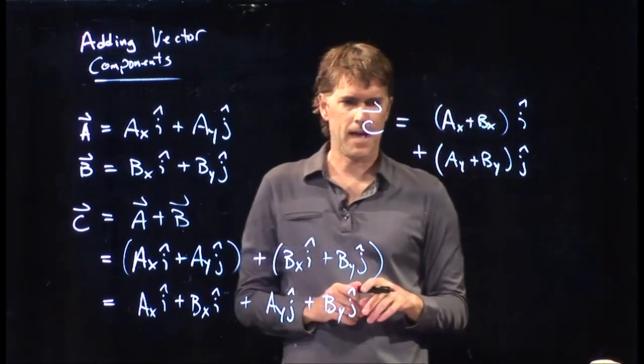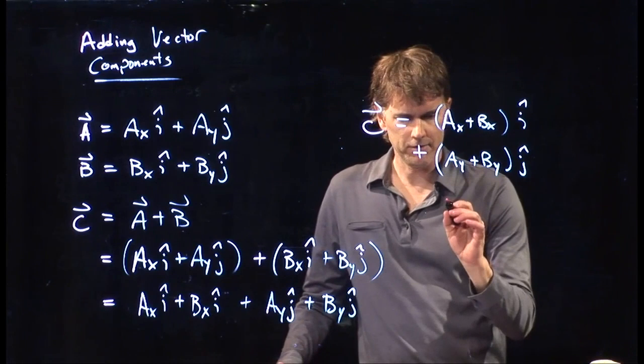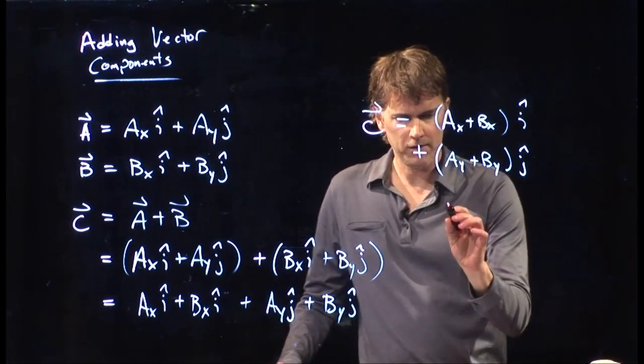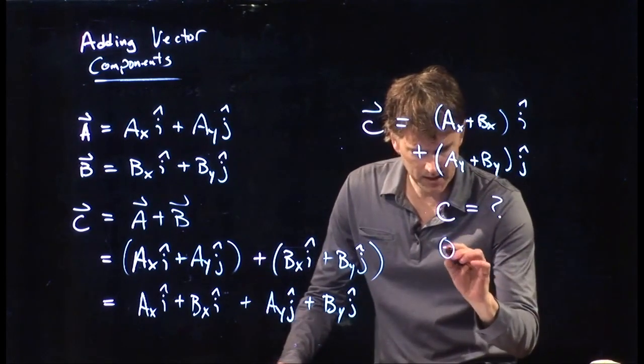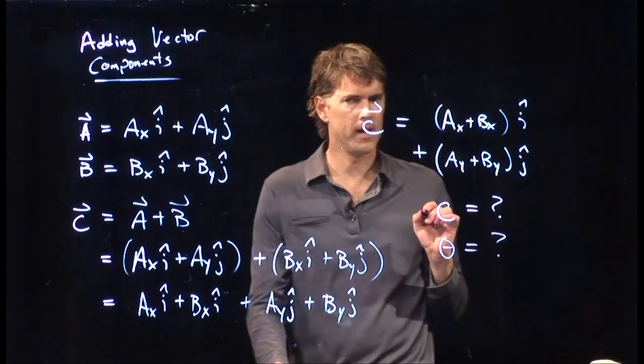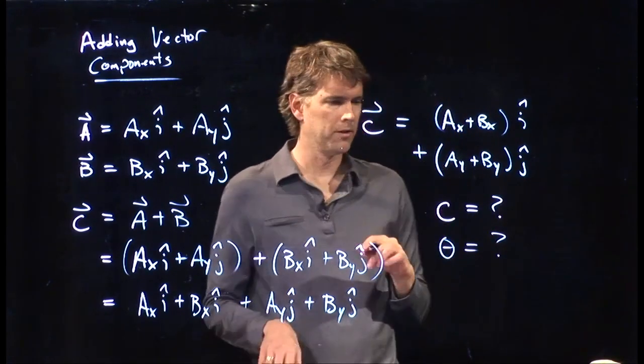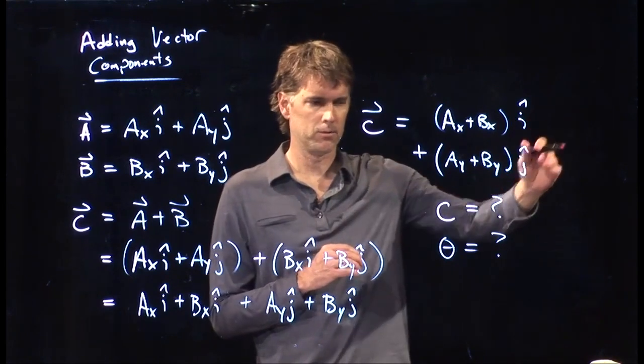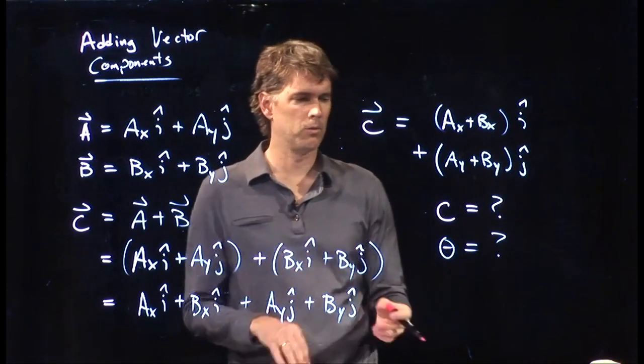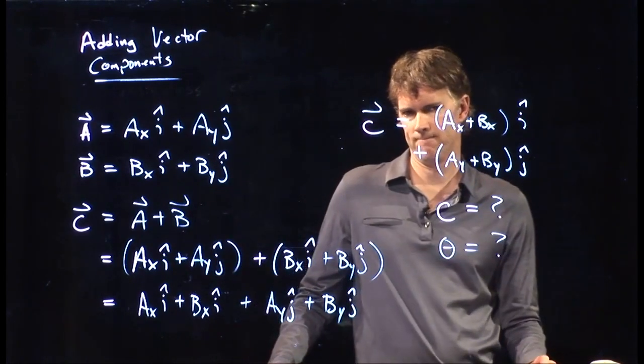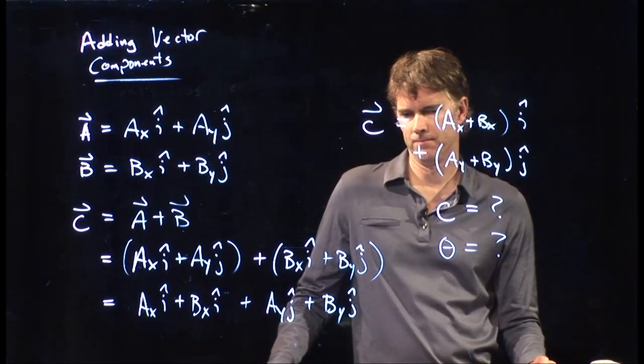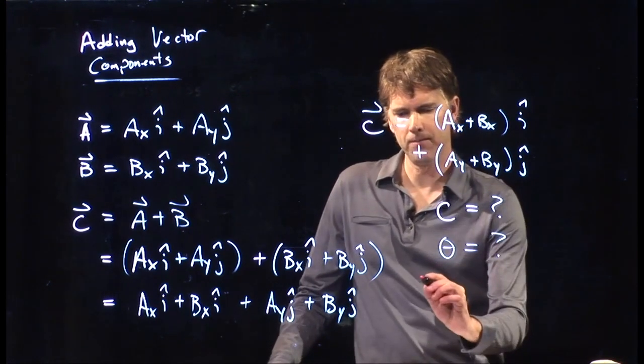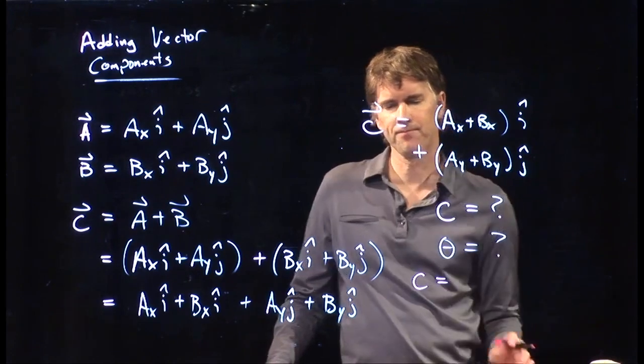So let's take a look at two things here. Let's ask the following question: What is C equal to? And what is the angle theta equal to? If we are in polar coordinates, we want to know the magnitude, which is C, and we want to know the angle relative to the x-axis, which is theta. So, how do I do it? Any thoughts? How would we get C?